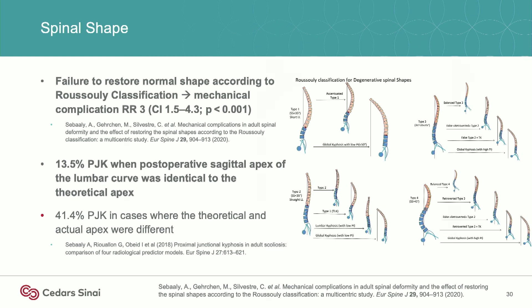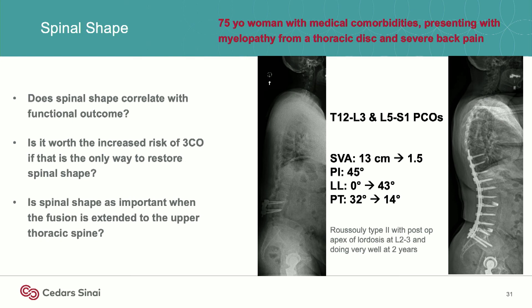The limitations right now are: does spinal shape really correlate with functional outcomes? And in cases where you won't be able to get the correction without cutting a three-column osteotomy, is it worth it for that particular patient to restore spinal shape if you can get them balanced with a less risky surgery? And when you're going all the way up to the upper thoracic spine, do the rules really hold in those situations as well?